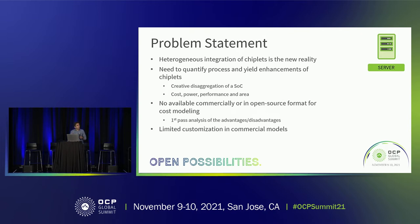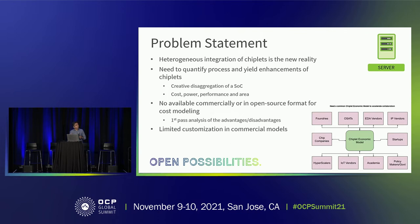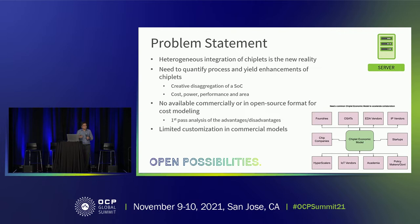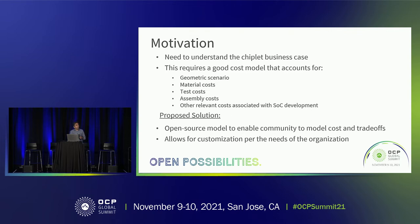At our Business Working Group workshop last year, one of the top-voted items was the need for a cost model — a way to understand trade-offs with and without chiplets. What we're envisioning is an economic model that takes inputs from foundries, OSATs, EDA vendors, or IP vendors, feeds them into the model, and provides a trade-off analysis usable across the industry. We're hoping this becomes an open source model — the model itself open source, while the data doesn't have to be.